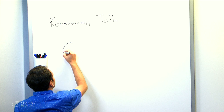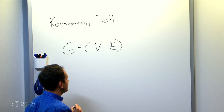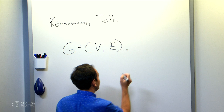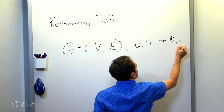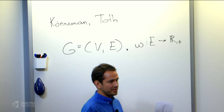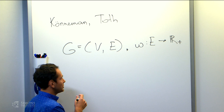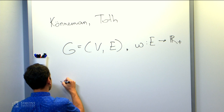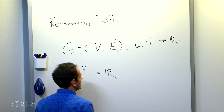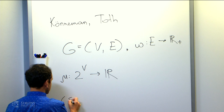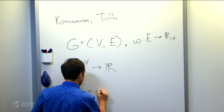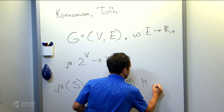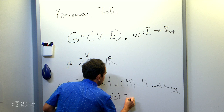I'm going to speak about computing the Nucleolus in Cooperative Matching Games. Let me first define the problem. We are given a graph — a set of nodes and a set of edges — and we're also given edge weights. So for each edge, we have a non-negative weight. As in game theory, one usually has a value function. For each subset of nodes, we are going to have some value, a function mu which assigns a value to each subset of nodes. In our case, this function is the maximum weight of a matching M in the subgraph of G induced by S.